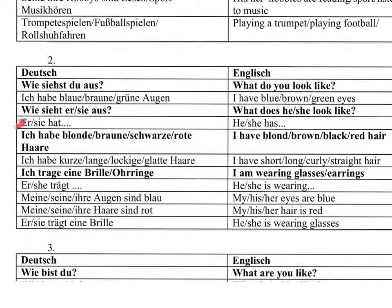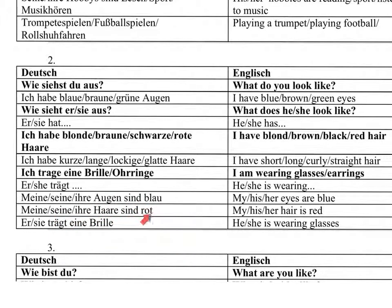And then when talking about the third person: Wie sieht er/sie aus? Er hat blaue, braune, grüne Augen. Er hat blonde, braune, schwarze, rote Haare. Er hat kurze, lange, lockige, glatte Haare. Er trägt eine Brille. Ohrringe. Seine/ihre Augen sind blau. Seine/ihre Haare sind rot. Er/sie trägt eine Brille.